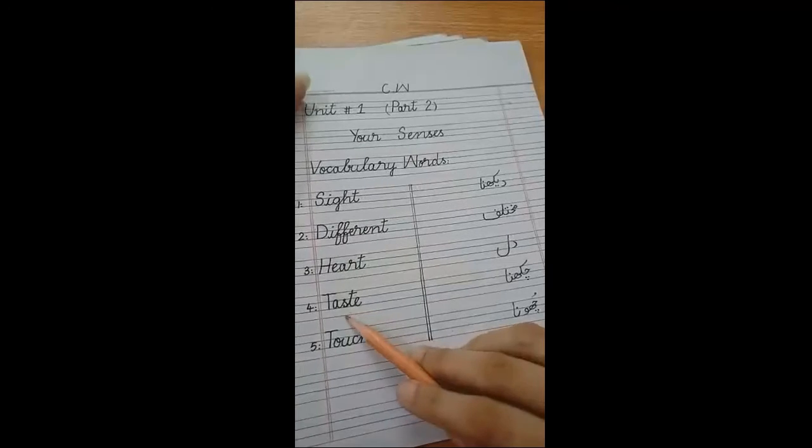Okay, on number four. Taste. Hum koji bhi chiz taste kerti hai na? Ice cream taste kerti hai na? Koji bhi meethi chiz ho, namkeen ho. Hum taste kerti. Kya hai ye? Ismeh namha kam hai, ismeh meetha zha da hai. Toh taste ka kya mtlap hotta hai? Chakkhna. Kisi bhi chiz ko chakkhna.